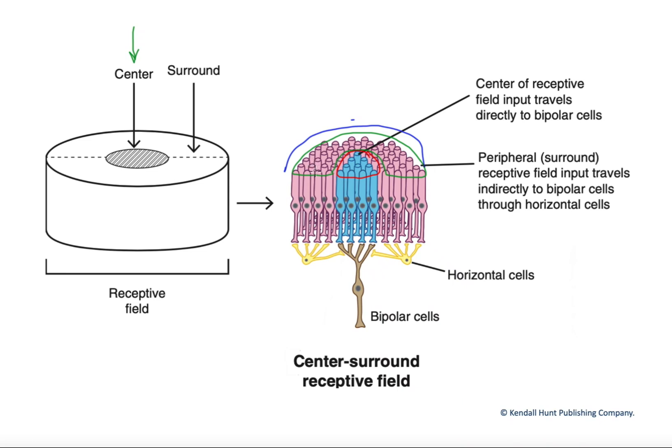Conversely, there are off-center bipolar cells, in which case light hitting the center would turn it off, and light hitting the surround would activate it.